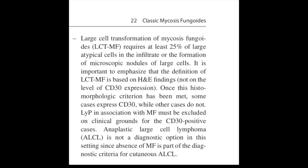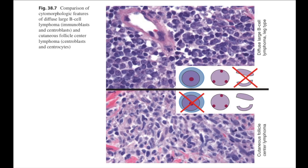Here's an example of the writing style — it's fantastic. Very straightforward, easy to read, conversational, and again very practical. For example: large cell transformation of mycosis fungoides requires at least 25% of large atypical cells in the infiltrate or the formation of microscopic nodules of large cells. It's important to emphasize that the definition of LCT of MF is based on H&E findings, not on the level of CD30 expression. And: anaplastic large cell lymphoma is not a diagnostic option in this setting, since absence of MF is part of the diagnostic criteria for cutaneous ALCL. These are things I see people get confused about all the time, and Dr. Subtil hits every single one of them.